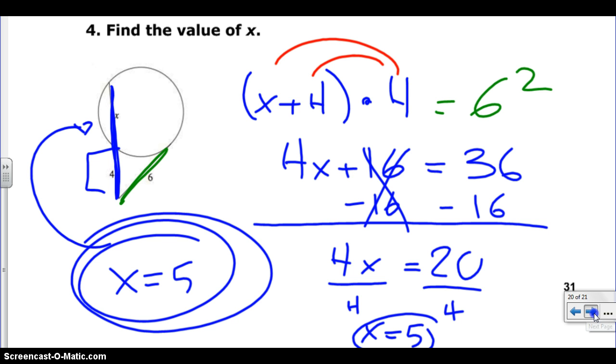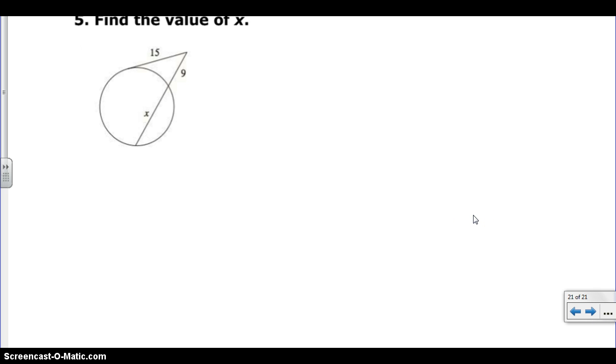One more. One last problem. Find the value of X. So this one looks exactly the same as the one before, just that they moved the nose on the beak there if you see it. So look. The length of the whole piece, X plus 9 is the secant. Very good, Siegel. X plus 9 times the outside piece, 9, equals our tangent, which in this case is 15, squared.